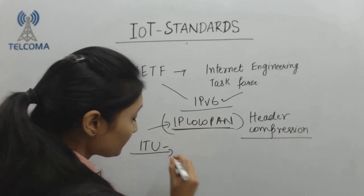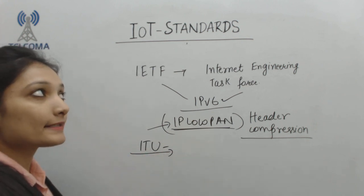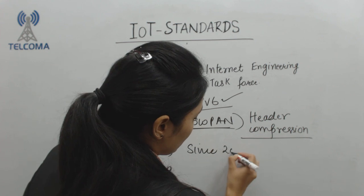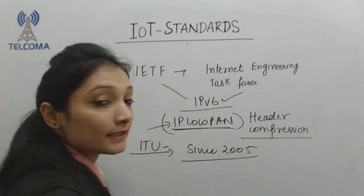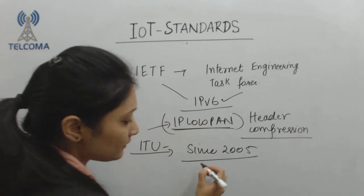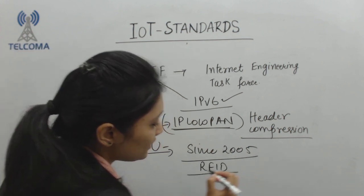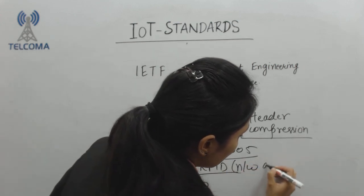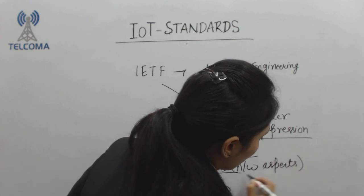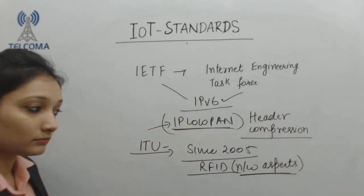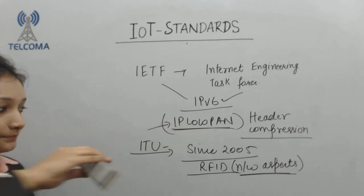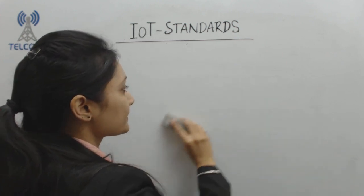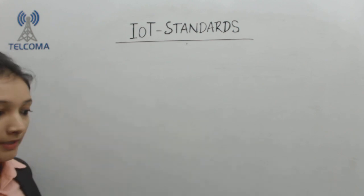ITU — the International Telecommunication Union — is another sector working for the standardization of IoT since 2005. It basically works in the field of network aspects such as radio frequency identification (RFID) tasks, dealing with network aspects and standardizations. The Open Mobile Alliance has also been working for standardization so that various devices can connect in an environment.